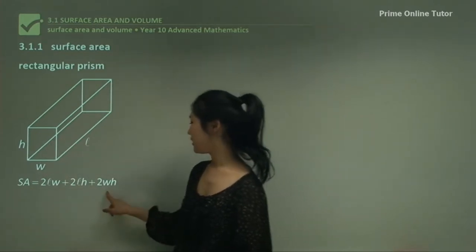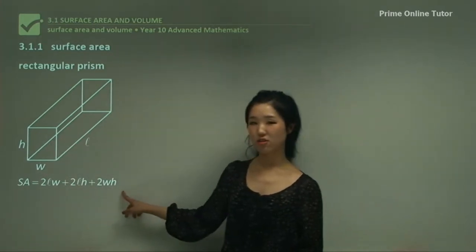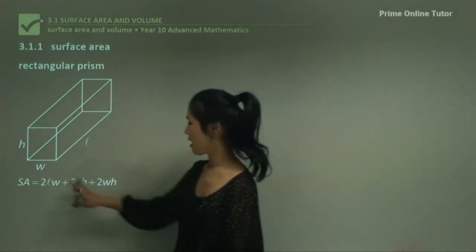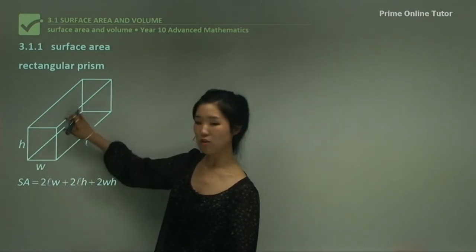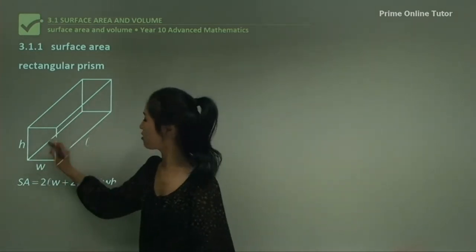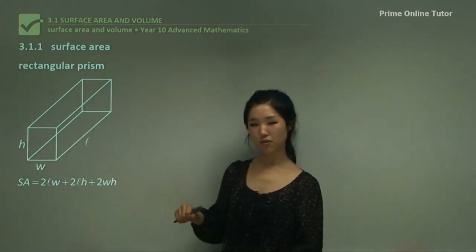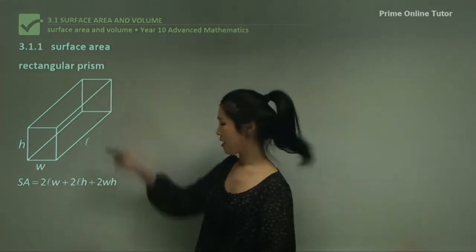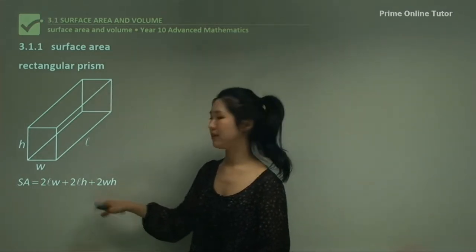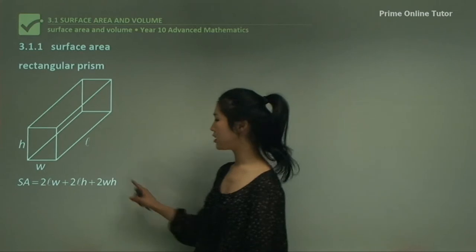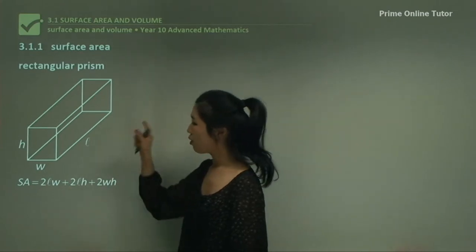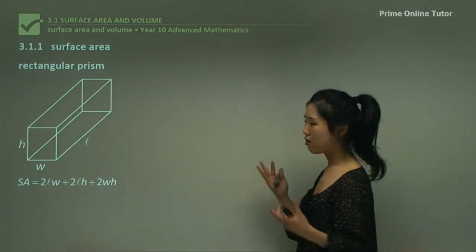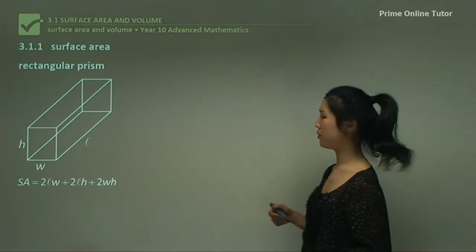And then finally WH — you can see that this is W and this is H. The first particular face of the shape has an identical one at the back, so that's why we multiply by 2 as well. It's basically 2 times all the shapes. You add it all up to get the surface area, so it's very simple.